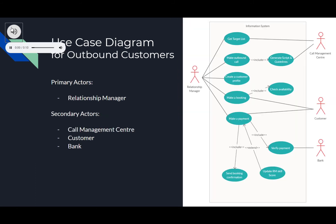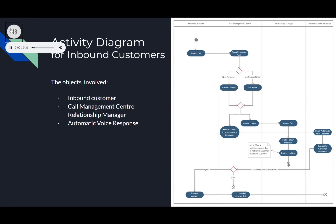The outbound diagram is similar to the inbound use case diagram, except that the relationship manager requests a target list and makes outbound calls to these contacts. An activity diagram describes the dynamic aspects of the information system, modelling the flow from one activity to another. We identified candidate use cases and then modelled the workflows between each of them, in this instance showing the process flow of the inbound customer.